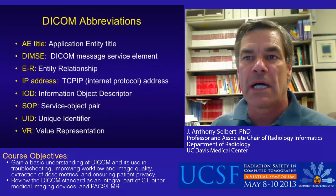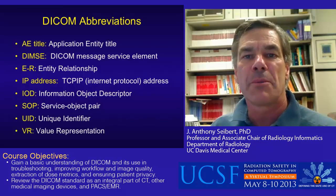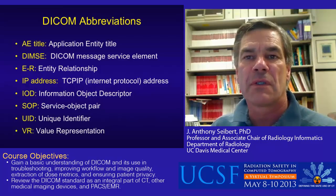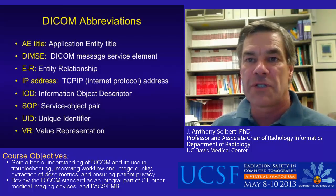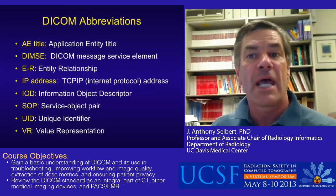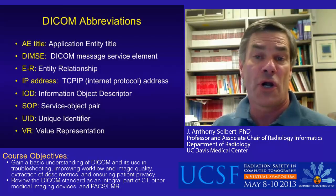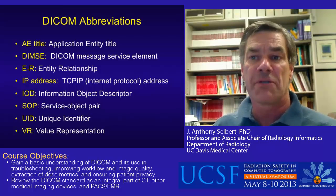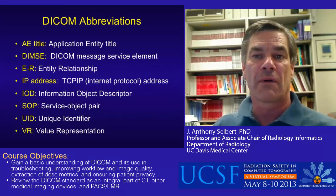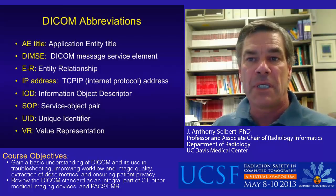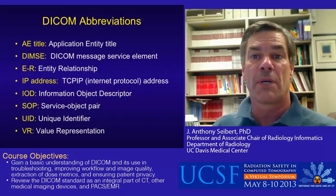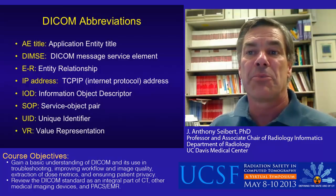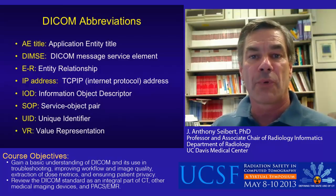When working with DICOM, it is important to understand the acronyms and abbreviations. Listed here are some of the more frequently encountered terms. For example, an AE title — the application entity name, such as cardiac CT — is given to a device which specifically identifies it within a network. Together with the unique IP, internet protocol address, and port number, the device is recognized and is able to communicate on the network using DICOM protocols.